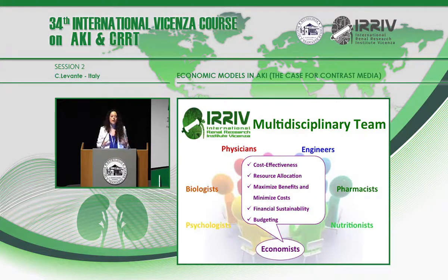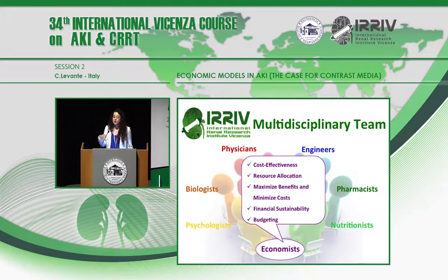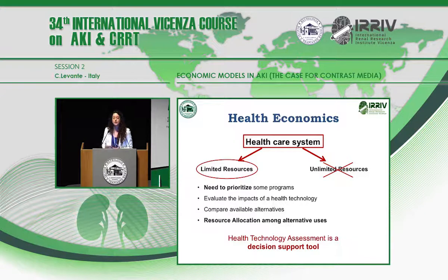Economists take part in the evaluation process of new health technologies by analyzing the available projects to maximize benefits while at the same time minimizing costs. This is a necessary step in order to allocate resources among possible available investments, always done with a cost-effectiveness analysis, ensuring financial sustainability over the medium to long term. This is necessary because the healthcare system doesn't have unlimited resources — we have to cope with limited resources. Among possible investments, we need to prioritize those that deliver the highest benefits and do not waste resources.